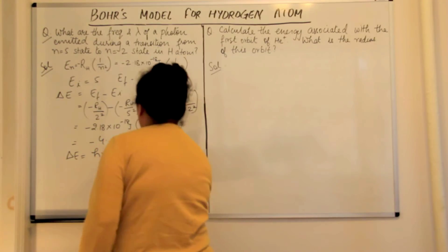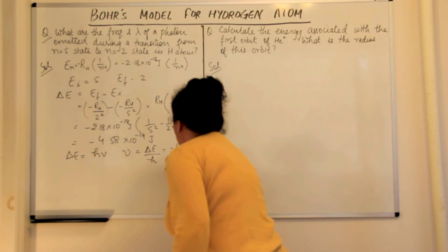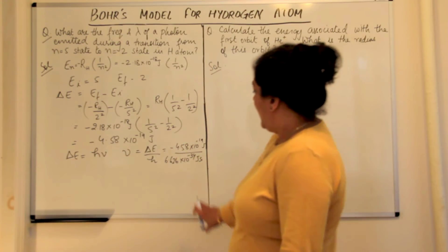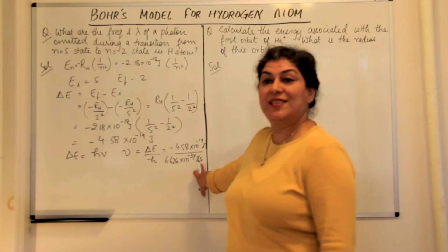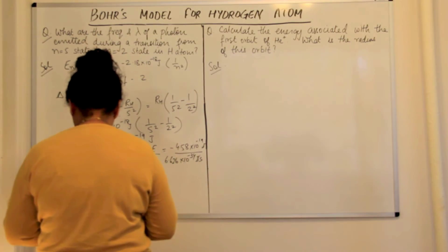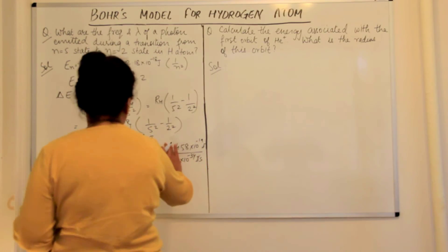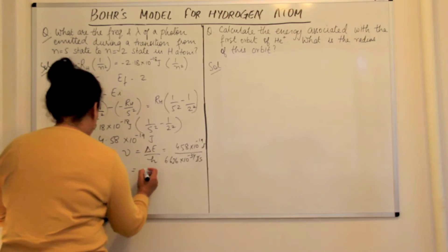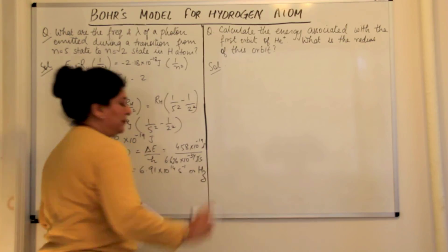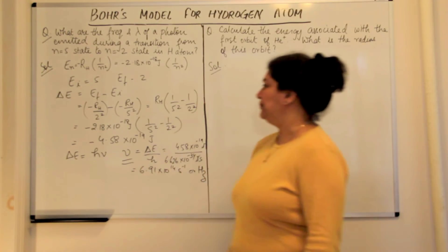What is Planck's constant? This would be equal to minus 4.58 × 10⁻¹⁹ joules, divided by the value of h, which is 6.626 × 10⁻³⁴ joule·second. The joule and joule cancel out, so second inverse is hertz, giving us the unit for frequency. We are not interested in the negative value because frequency cannot be negative. So the frequency equals 6.91 × 10¹⁴ s⁻¹ or hertz.